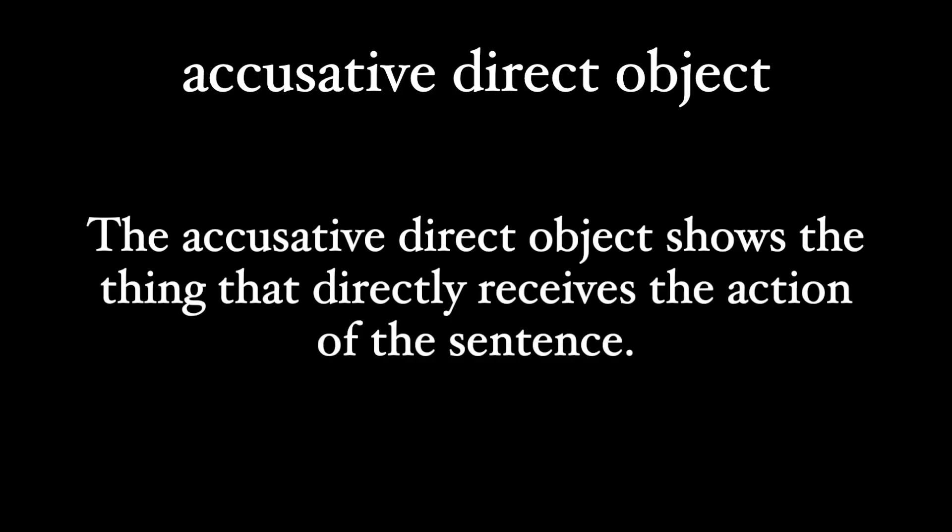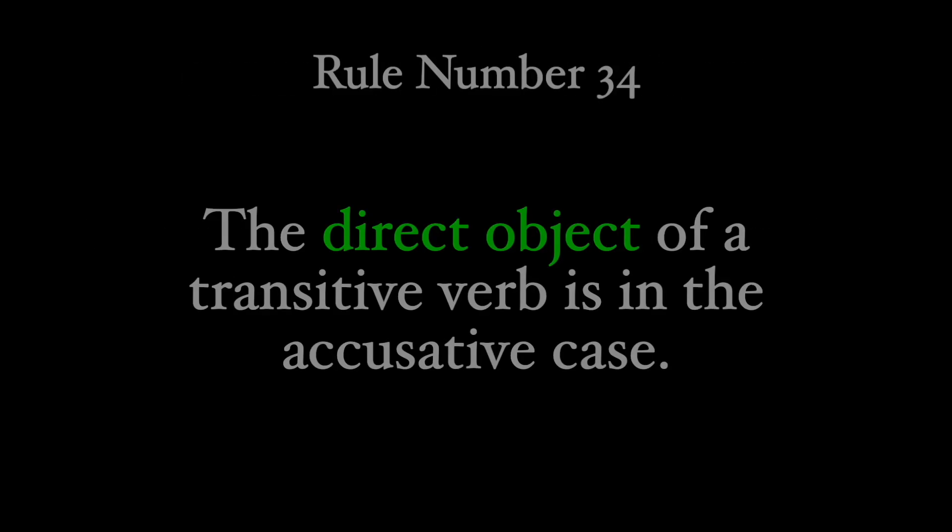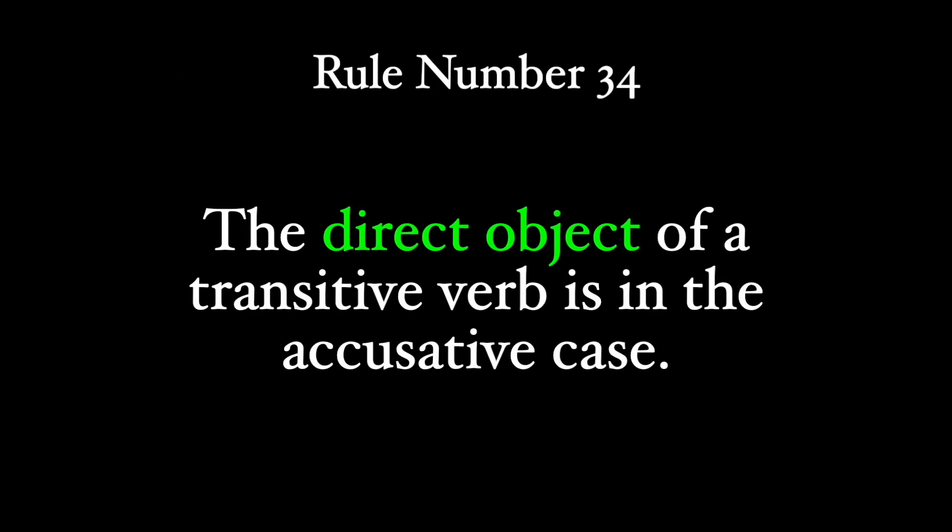To review, since this is perhaps one of the most commonly seen rules in Latin syntax: the accusative direct object shows the thing that directly receives the action of the sentence. So often, a Latin sentence can be boiled down to its essential parts of nominative, accusative, verb. Don't forget rule number 34: the direct object of a transitive verb is in the accusative case.